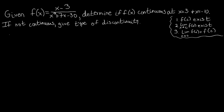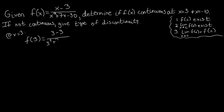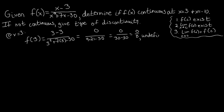So first we're going to look at x=3. The first question we ask is: does f(3) exist? Evaluating f(3): we get (3-3) on top over (3² + 7·3 - 30). The numerator gives us zero. The denominator gives us 9 + 21 - 30, which is also zero. So we get zero over zero, meaning f(3) is undefined.